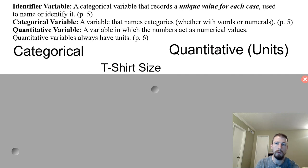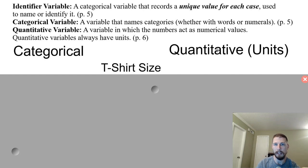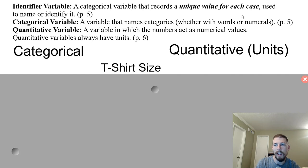Let's do a quick review of variables. What are variables, and what types do we have? The first is an identifier variable, which simply helps us identify the case — like a social security number or an Amazon customer number. However, if each case is an order and the same customer can have more than one order, then the case number would be the identifying variable, not the customer number, since it's not a unique key for each case. We don't deal with identifier variables very much.